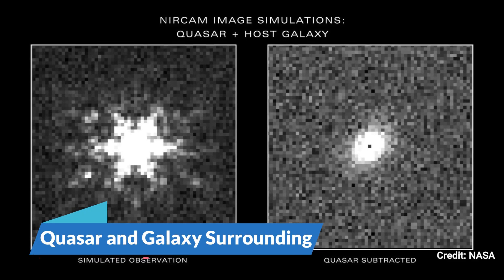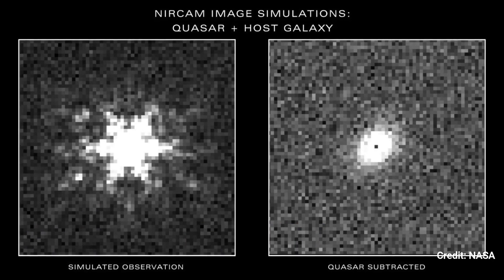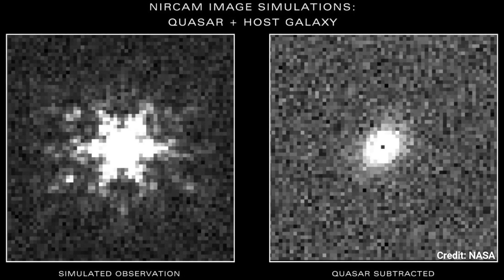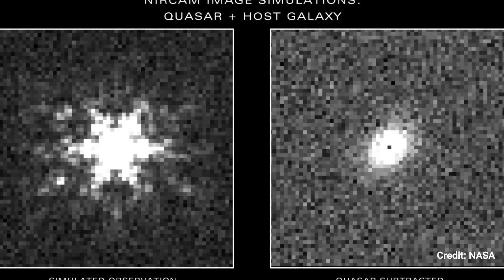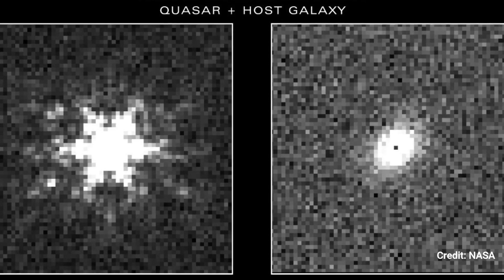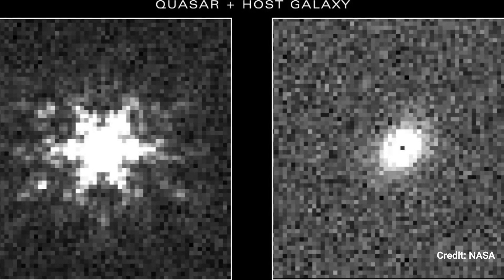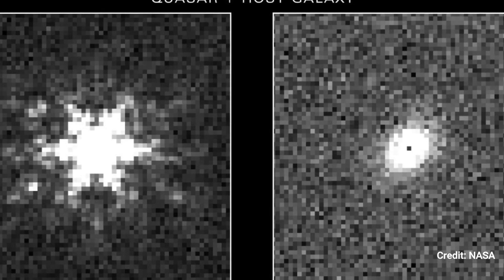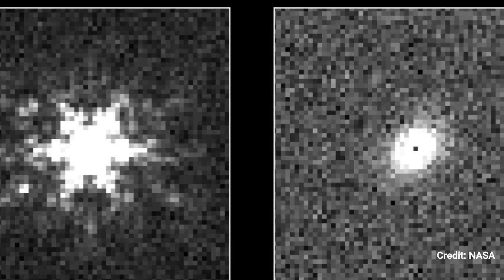Quasar and Galaxy Surrounding: the James Webb Space Telescope will be used for the first time to explore the galaxies that surround three brilliant quasars in detail. They will photograph each target using Webb's near-infrared camera, as shown in the generated image at left. Then, as shown at right, they will remove the quasar's light to reveal the galaxy and its stars. These findings will add to our understanding of the era of reionization by revealing the composition of three galaxies in the early cosmos.